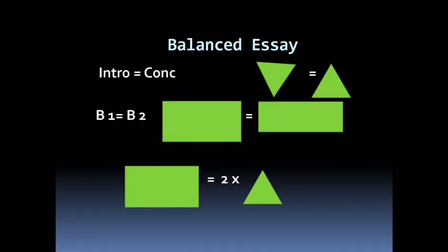For example, if you wrote an introduction which is six lines, your body should be almost the double which is on average ten to twelve lines. And the other body should be almost the same. And the concluding paragraph should be almost equal to the introduction.